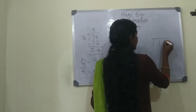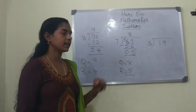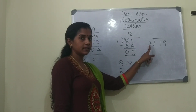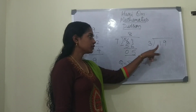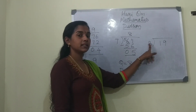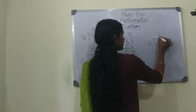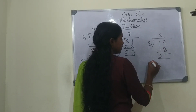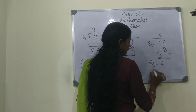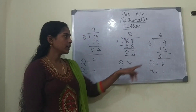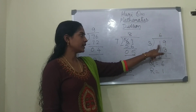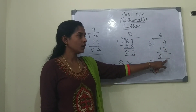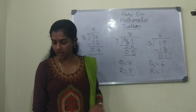Next one: 19 divided by 3. Do we get 19 in the 3 times table? 3 fives are 15, 3 sixes are 18, 3 sevens are 21. So 3 sevens is not possible; we take 3 sixes are 18. Subtract: 9 minus 8 is 1, 1 minus 1 is 0. The quotient is 6 and the remainder is 1. So 19 divided by 3 — 19 minus 18 is 1; quotient is 6 and remainder is 1.